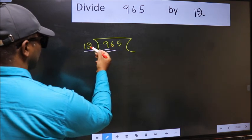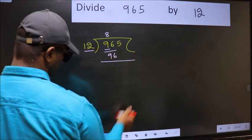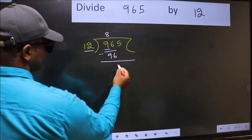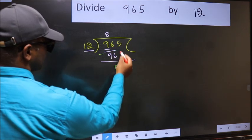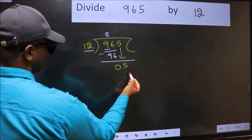When do we get 96 in the 12 table? 12×8 is 96. Now you should subtract. 96 minus 96 is 0. After this, bring down the next number. So 5 down.